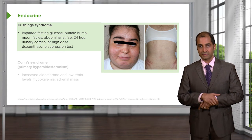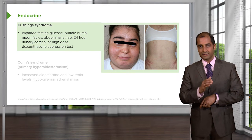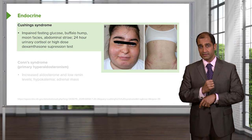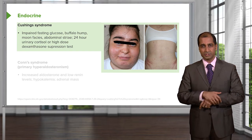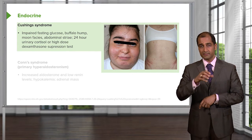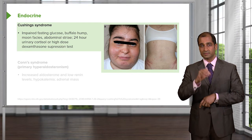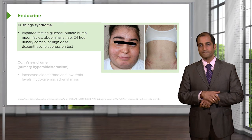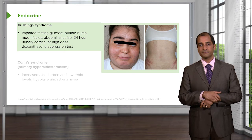The most common cause is actually not from our body — it's exogenous. It's called factitious, iatrogenic, or exogenous. Anytime you see those three words, it means that the particular drug, hormone, or whatever it may be, is coming from an outside source. That's the most common. Think about prednisone and all the different reasons a patient might be taking it.